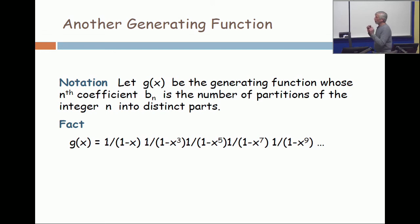Okay, so with the understanding that this is supposed to count the number of partitions in the odd parts, look at the function and let's explain why. It's 1 over 1 minus x, 1 over 1 minus x cubed, 1 over 1 minus x to the fifth, etc.